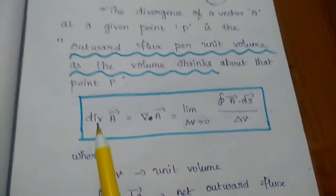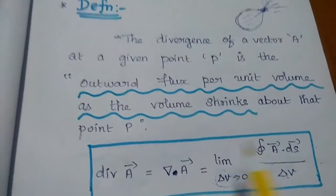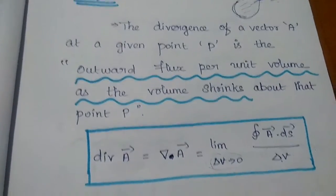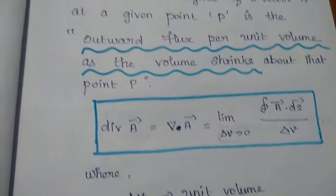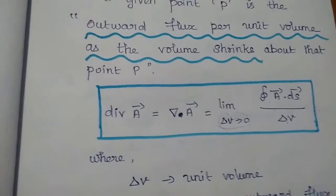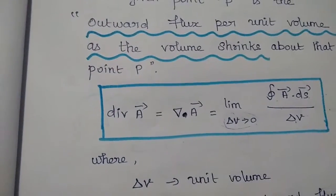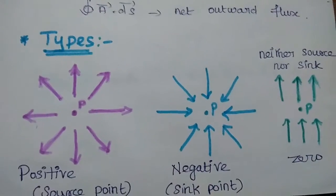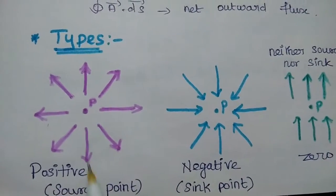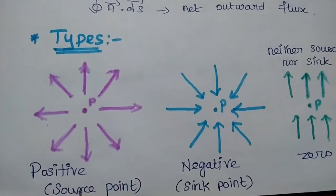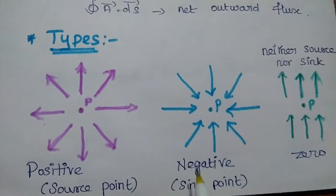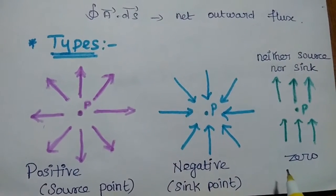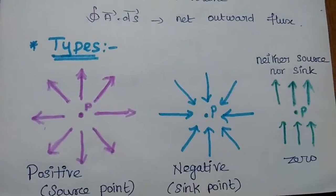This is the general definition for divergence. Next, there are different types of divergence available — three types. First one is positive divergence, next one is negative divergence, and the third one is zero divergence.